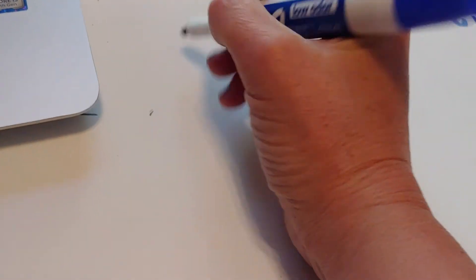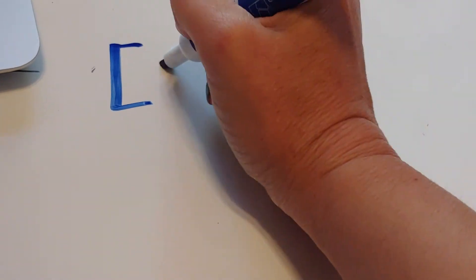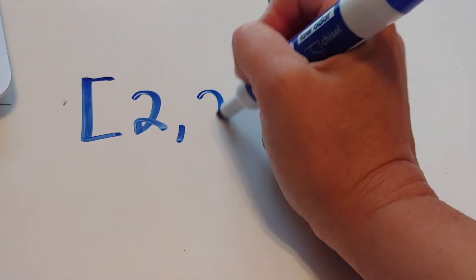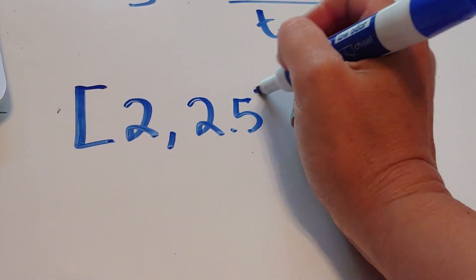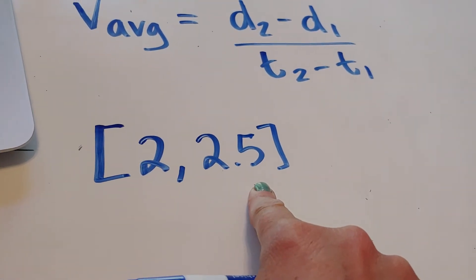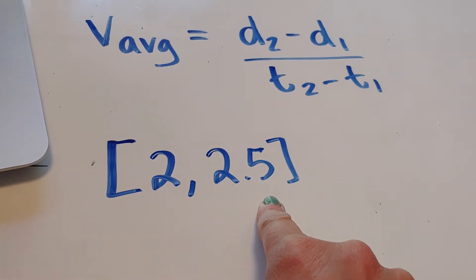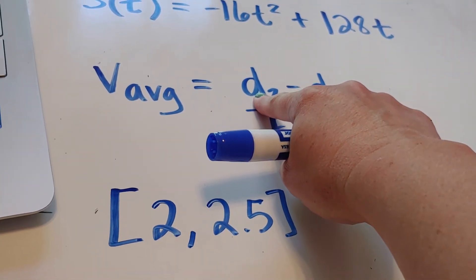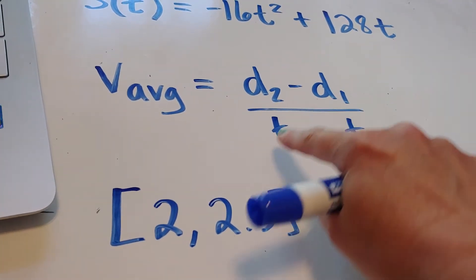So let's say I was asked to figure out the average velocity over the time interval from 2 to 2.5 seconds. What I want to do is, I want to know what's the distance traveled at 2.5, like what's the height, what's the height at 2, and then find the difference.